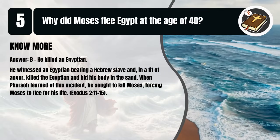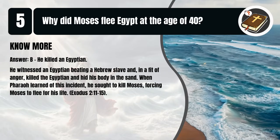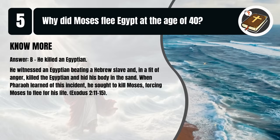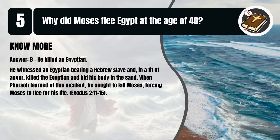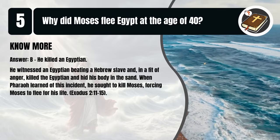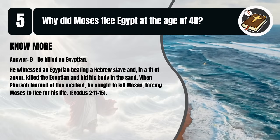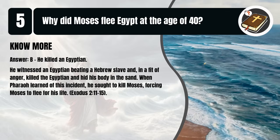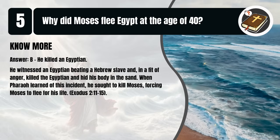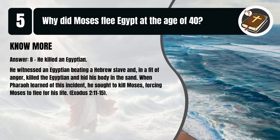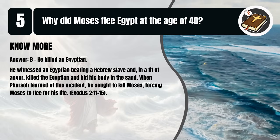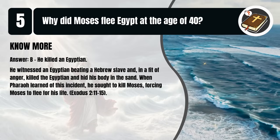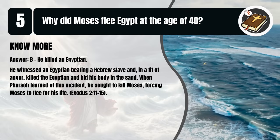That's B. He killed an Egyptian. He witnessed an Egyptian beating a Hebrew slave and, in a fit of anger, killed the Egyptian and hid his body in the sand. When Pharaoh learned of this incident, he sought to kill Moses, forcing Moses to flee for his life. Exodus 2:11-15.